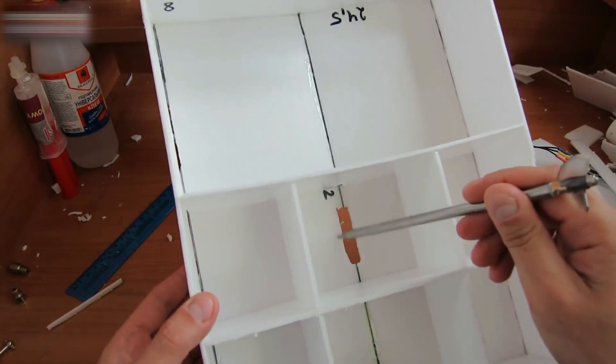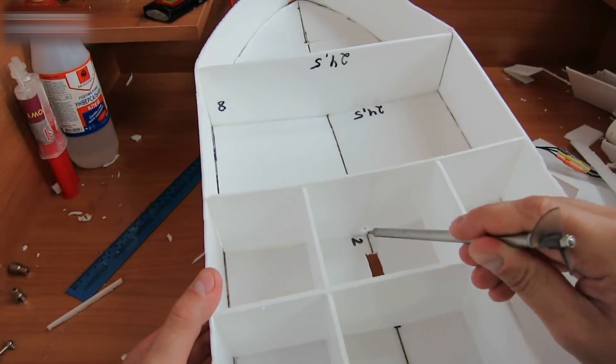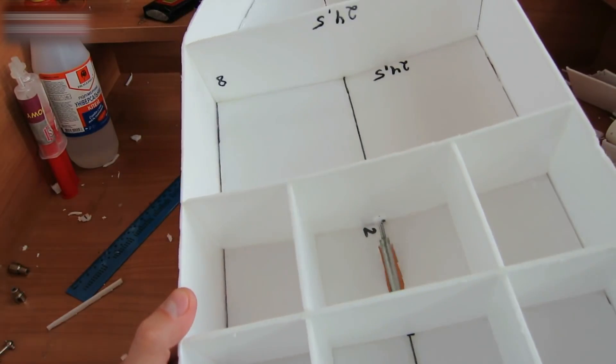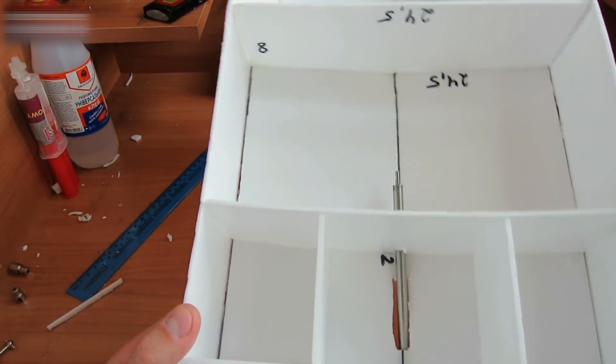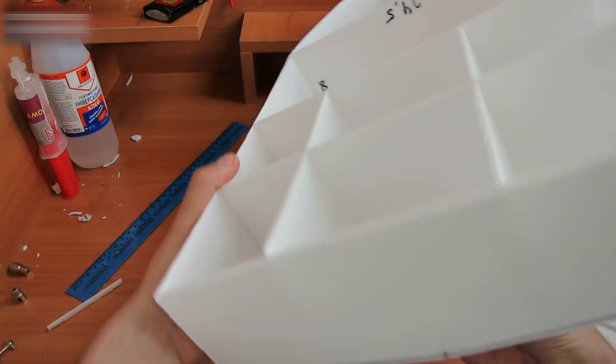Make two holes for the stern tube. One must be this long and the other is just a small circular hole. Insert the tube here and fix it with the two-component glue.